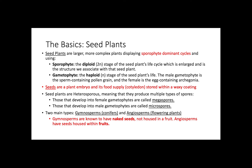There are two major types of seed plants. Gymnosperms, which are conifers, are known to have naked seeds not housed in a fruit. Angiosperms have seeds housed within fruits and are frequently referred to as flowering plants.